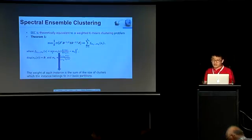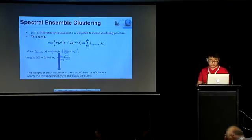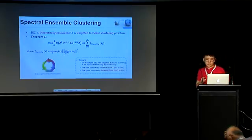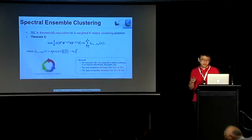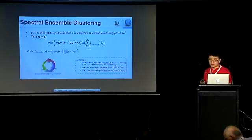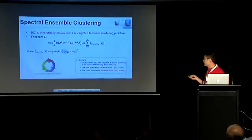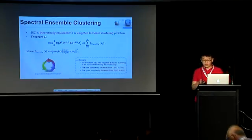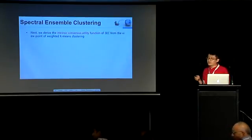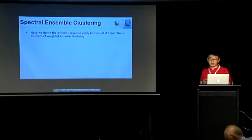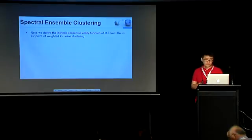This means our proposed SEC should be robust. And by doing so, we can obtain the solution for SEC by minimizing the weighted k-means problem. And so the time and space complexity can be decreased to both big O of n, which is much smaller than before. And by analyzing SEC in the viewpoint of weighted k-means, we can show the intrinsic consensus utility function.